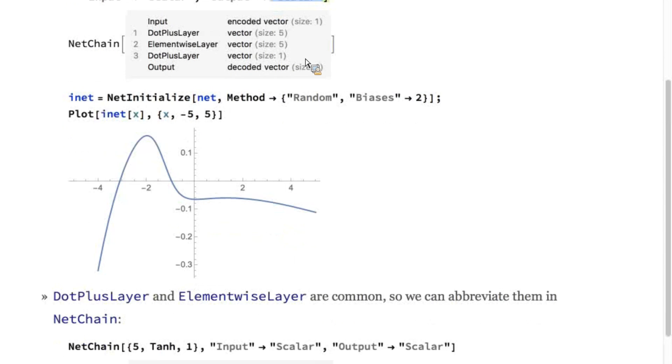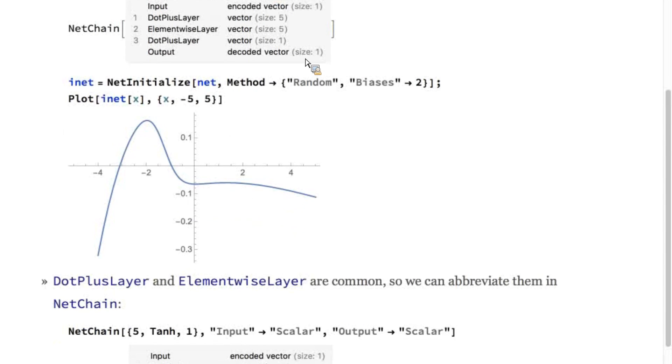Because they are so common, we can write dot plus and non-linear activation layers with a kind of syntax sugar, which you can see here.